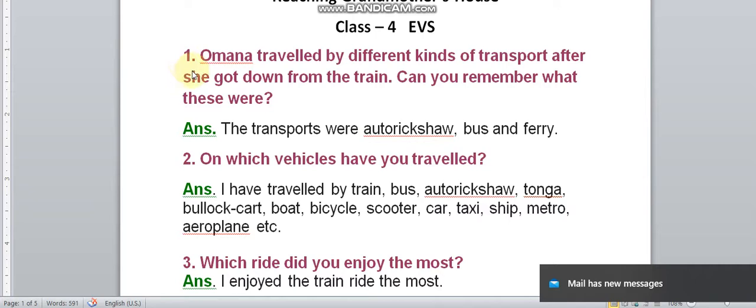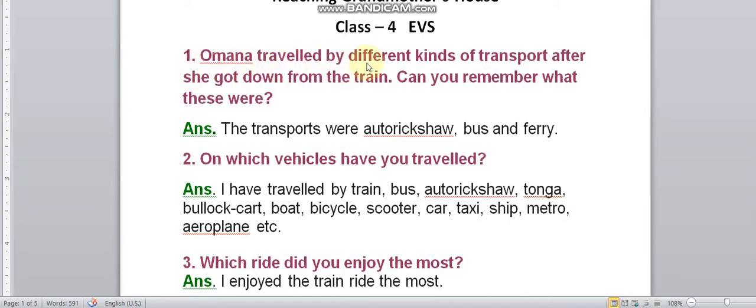Question 1: Omana travelled by different kinds of transport after she got down from the train. Can you remember what these were? The answer is the transports were auto rickshaw, bus and ferry.